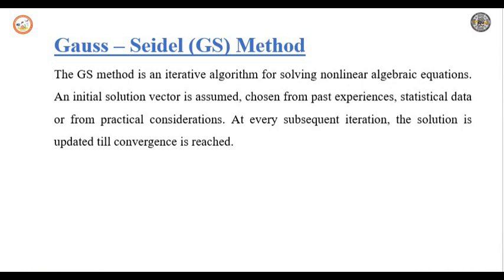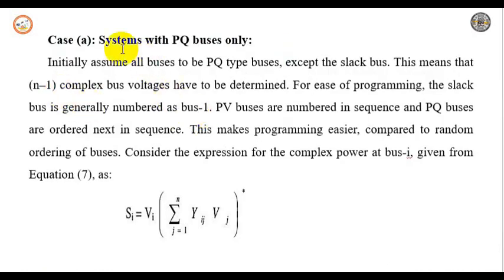Applying this Gauss-Seidel method to power system analysis, let us take up case by case. First case: system with PQ buses. If there are only PQ buses present in the power system, we need to find out the various quantities. Initially, assume all buses are PQ type except there will be one slack bus. If there are N buses in the power system and the slack bus is bus number 1, the total number of PQ buses will be N minus 1.